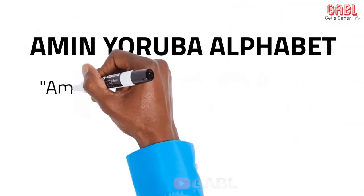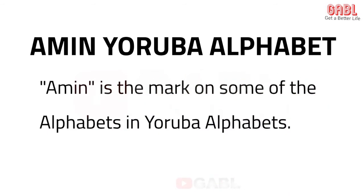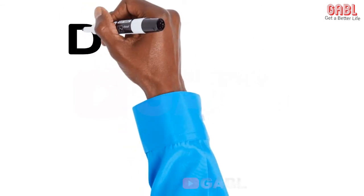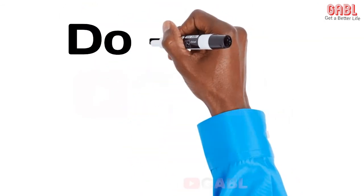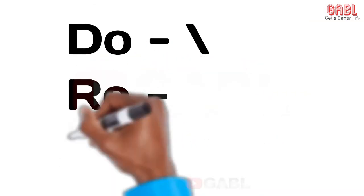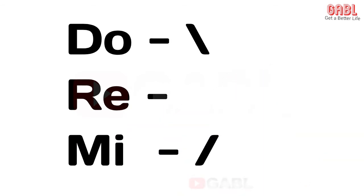Ami is the mark on some of the alphabets. We have DO, RE, and MI. This is DO. RE has no mark — it is invisible. This is MI.